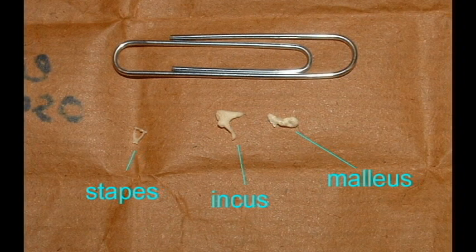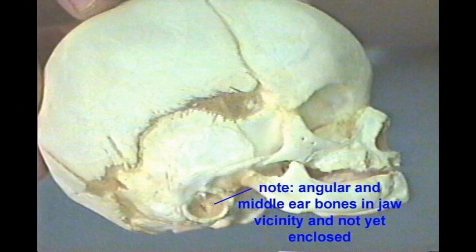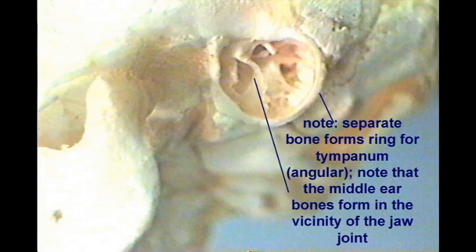In human embryos, we can see three little bones, the angular, the quadrate, and the articular, move from the jaw region to the ear where they become incorporated in the ear apparatus.